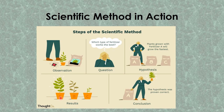From the results, plant A grew taller than the rest. Plant B and plant C did not grow as tall. So we can observe that when we use fertilizer A, plants grew very fast and tall. This brings us to our conclusion: our hypothesis was correct. We conclude that plants grown with fertilizer A will definitely grow the fastest. This is a simple way to put the scientific method to work.